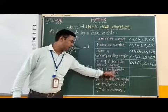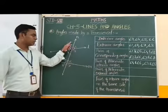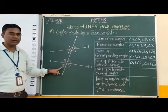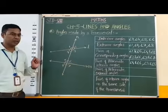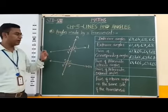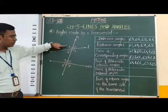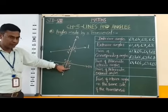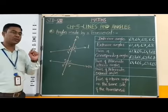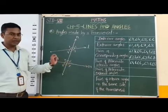Next, pairs of alternate exterior angles. Angle 1, angle 2, angle 7 and angle 8 are the exterior angles. Among these angles, angle 1 and angle 7, and angle 2 and angle 8 are the pairs of alternate exterior angles.